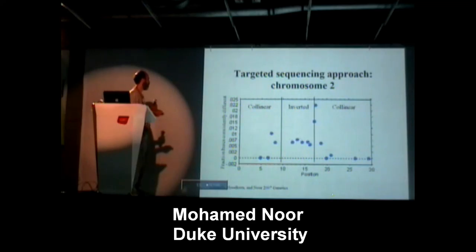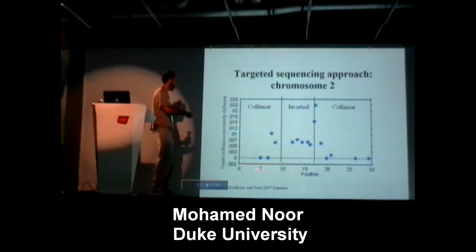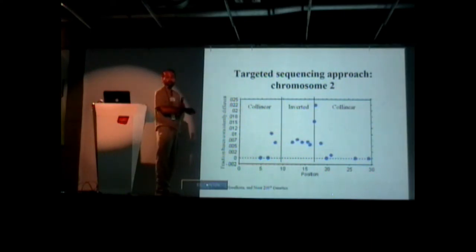We did this in collaboration with the probabilistic map. This is showing on the x-axis position along one chromosome. This is the second chromosome, the telomeric and the centromeric. These bars here show where the inversion is, from here to here.